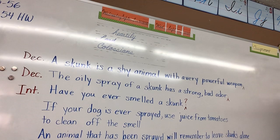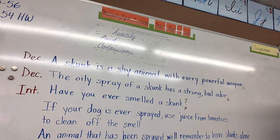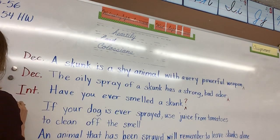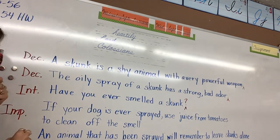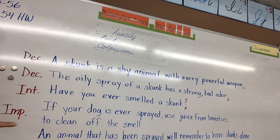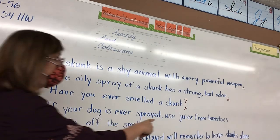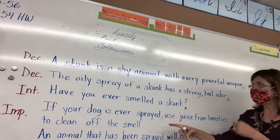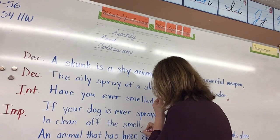Read the next sentence: 'If your dog is ever sprayed, use juice from tomatoes to clean off the smell.' Imperative. Very good — and so how are we going to punctuate it? With a period. Do you know where I need to put this period? This is one that would trick some of you, because you might put the period in the wrong place — the end of the sentence is right here, that's where you need to put the period.